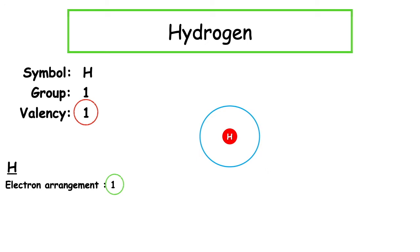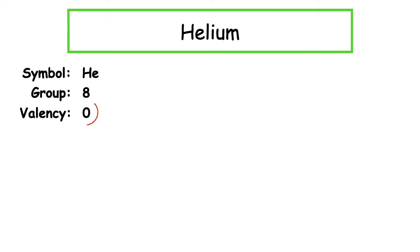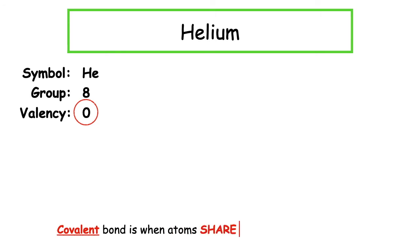The electron arrangement of hydrogen is 1. That electron is found in the first energy level, so we represent that diagram via a circle. Hydrogen has one electron in that energy level. The next element is helium, chemical symbol He, found in Group 8 with a valency of zero. It's really important to think back to our definition: a covalent bond is when atoms share electrons to achieve stability.